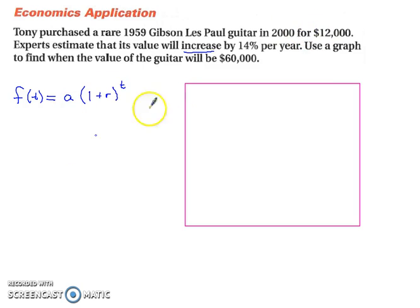So our starting value is $12,000. Then we have our 1 plus, and then our rate is 14%. So that means that's 0.14. And then we have t.